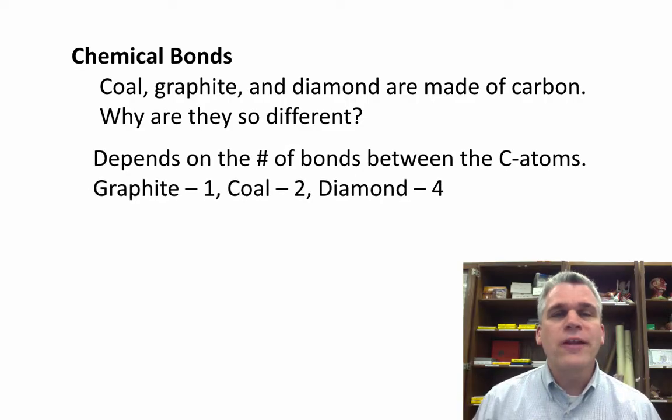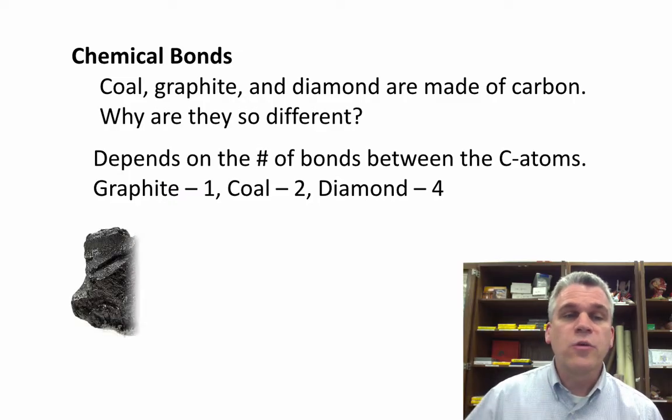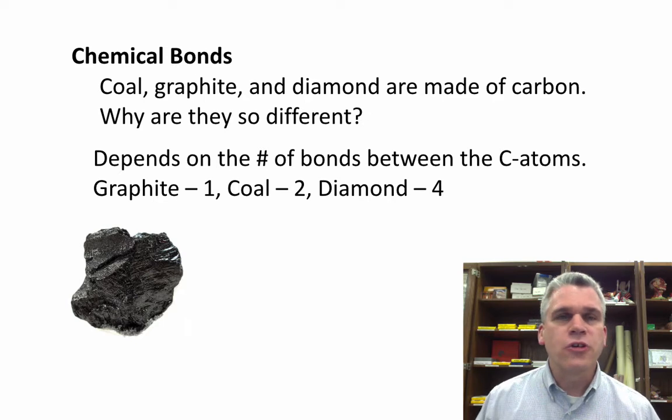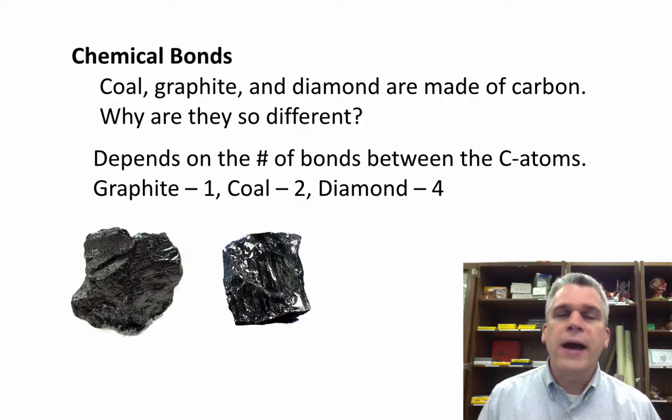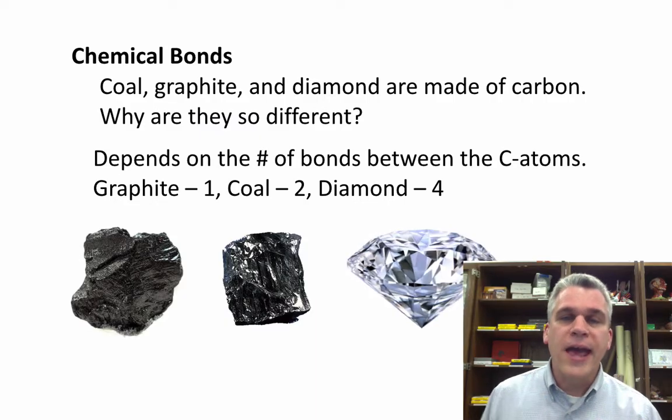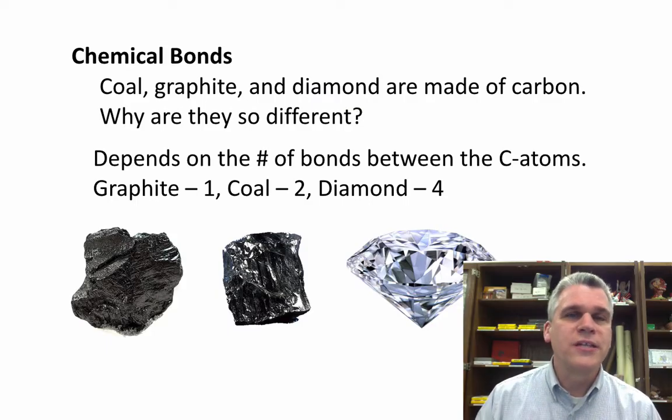Well, it depends on how many bonds form between all those carbon atoms. For instance, with graphite, there's only one bond between every carbon atom, so this makes this a very soft compound. Coal is a little bit harder. That has two bonds between each carbon atom. But diamond has four bonds between every carbon atom, and that makes it the hardest substance on Earth. So you can see, simply by changing how many bonds are between the carbon atoms, that totally changes the compound.